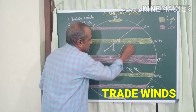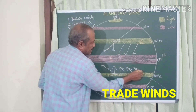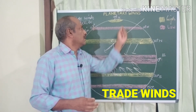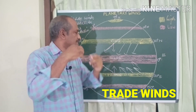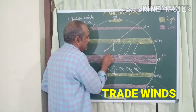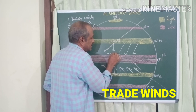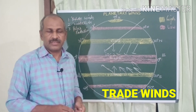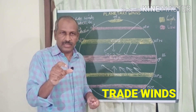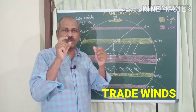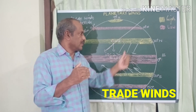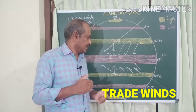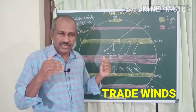The zone where the northeast trade wind and the southeast trade wind converge is called the Intertropical Convergence Zone (ITCZ). The ITCZ is the region where the northeast trade wind from the northern hemisphere and the southeast trade wind from the southern hemisphere converge near the equator.